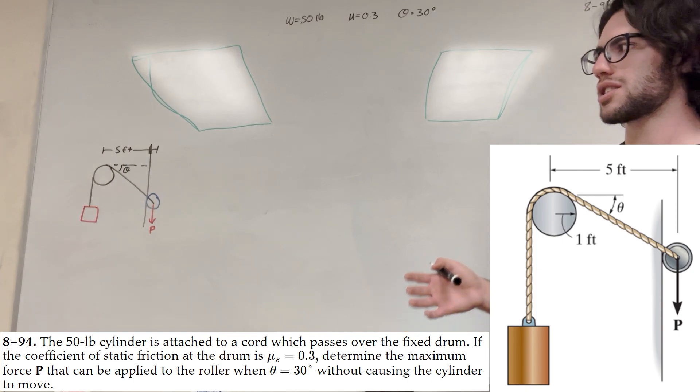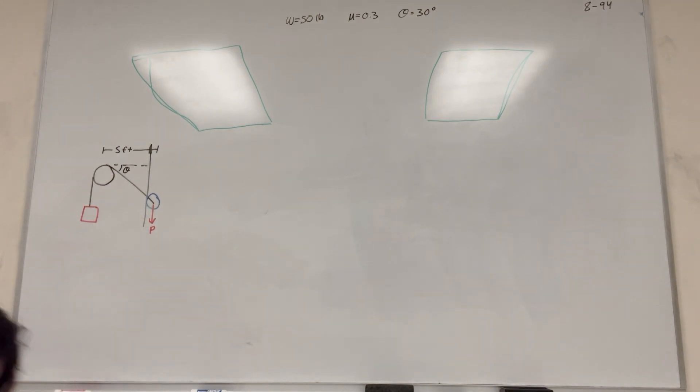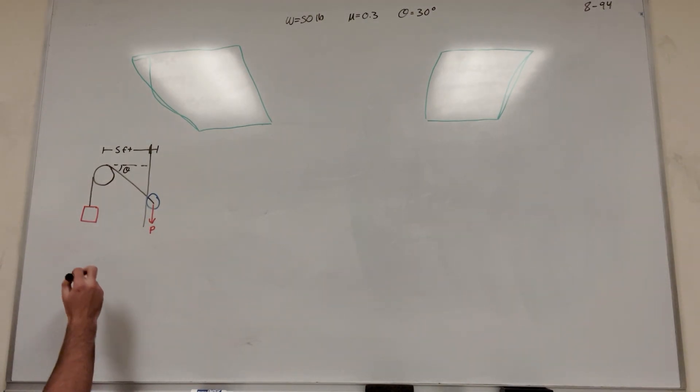So let's go ahead and start this by drawing a force body diagram. So let's just start with the force body diagram right here. So we have our drum. We have our theta is 30 degrees.